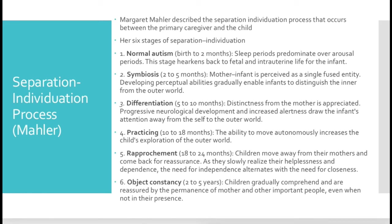In the fourth stage, practicing, from 10 to 18 months of age, the ability to move autonomously increases. Children tend to take their first steps at about 12 months and walk fairly well after that. In this process the child becomes more autonomous, increasing exploration of the outer world, and essentially practicing moving away from or separating from the mother or primary caregiver.